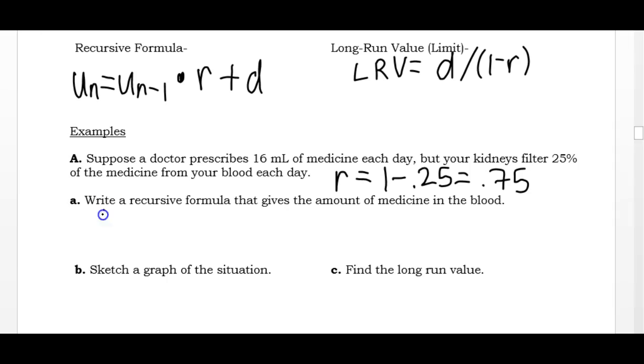My formula needs two pieces of information, where I start and how I change. So I'm starting with 16 milliliters in my bloodstream. I am retaining 75% after my kidneys filter out the 25%, but I'm also going to take an additional 16 milliliter dose to replace that filtering. So this is my shifted geometric formula. I have my ratio and my difference at the same time.